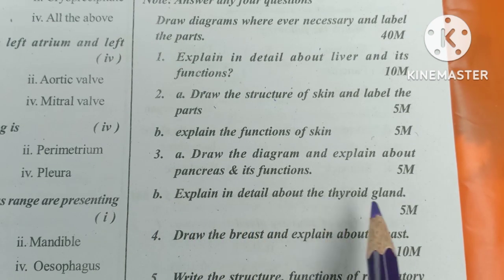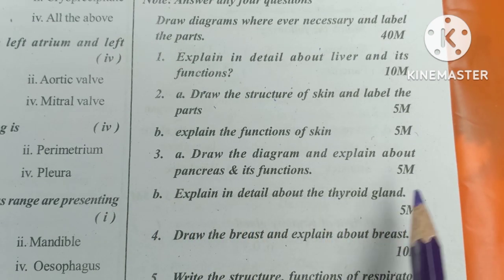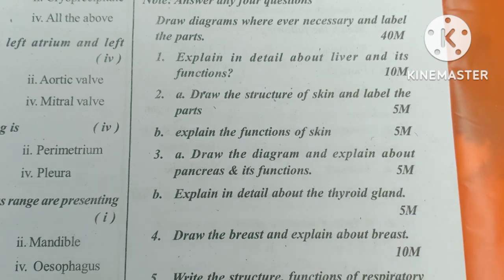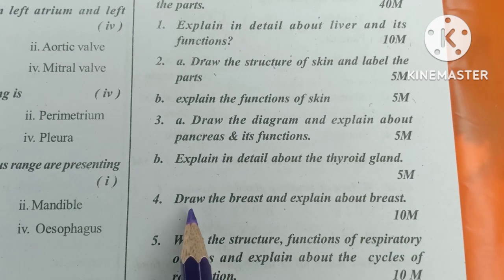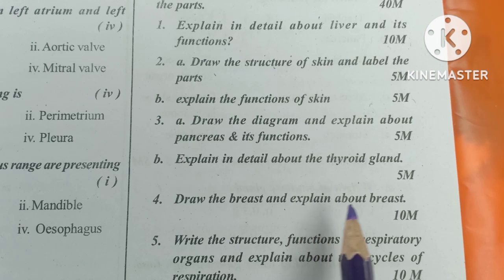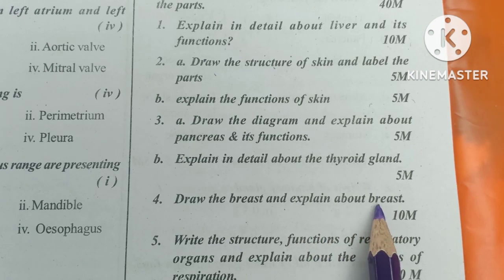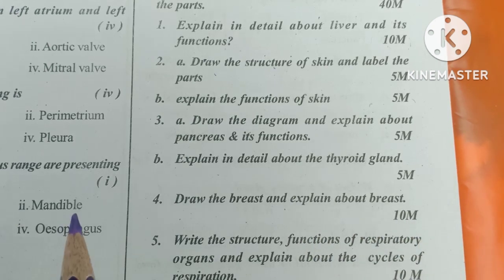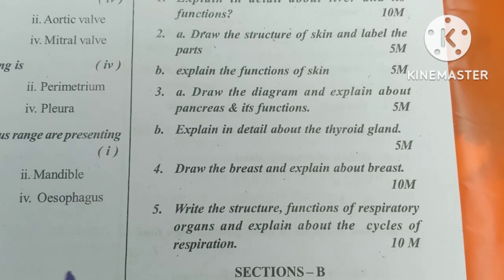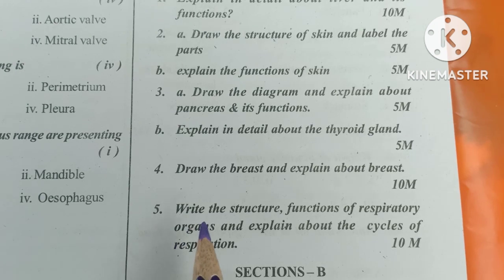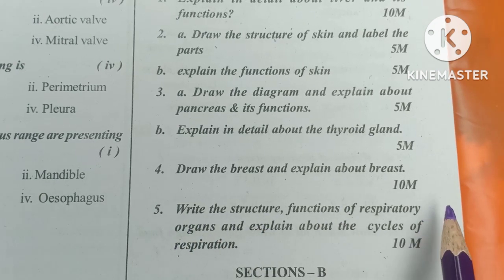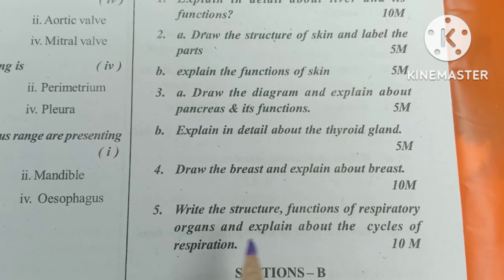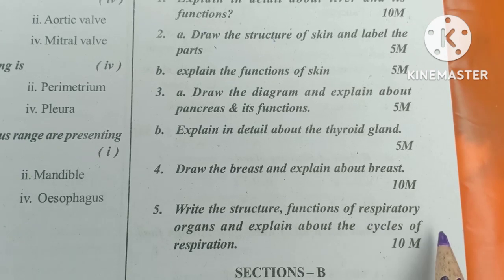Number 4: Explain in detail about the thyroid gland. It is 5-5 marks. Number 5: Draw the breast and explain about the breast. It is 10 marks.